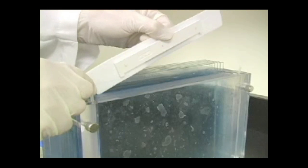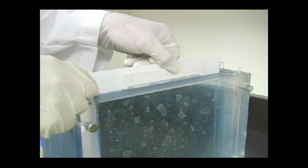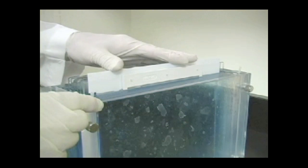Alternatively, insert a Protean Plus 2D comb into each hinged spacer plate. To minimize bubble formation, insert the comb at an angle.